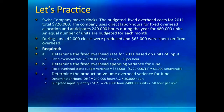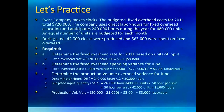For production volume variance, we need SQ* multiplied by standard rate. We are allowed 240,000 hours for 480,000 units — half an hour per unit — so for 42,000 actual units, 21,000 hours are allowed. Standard rate is $3 an hour. Comparing 20,000 denominator hours versus 21,000 SQ* hours, multiplied by $3, gives a production volume variance of $3,000 favorable. You can total the two variances to verify the total flexible budget variance. Happy solving!